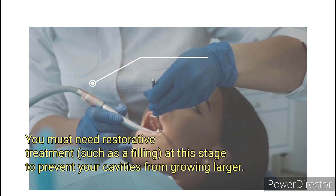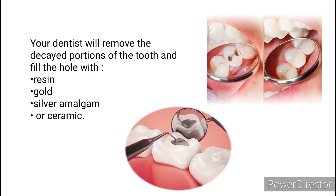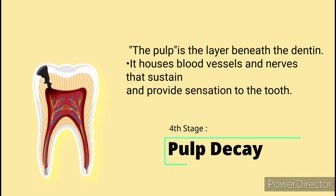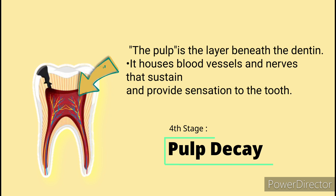Your dentist will remove the decayed portions of the tooth and fill the hole with resin, gold, silver amalgam, or ceramic. Fourth stage: pulp decay. The pulp is the layer beneath the dentin — it houses blood vessels and nerves that sustain and provide sensation to the tooth.